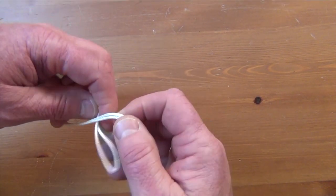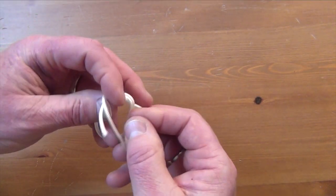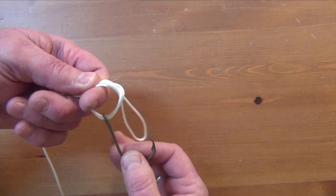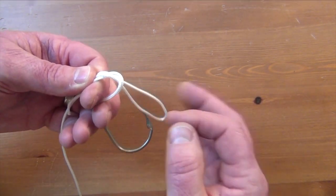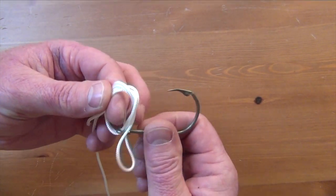Now all we want to do is we want to do an overhand, so we've got our double and we've done an overhand. Now we're just going to open up this loop, we're going to send whatever it is we're tying through that loop.